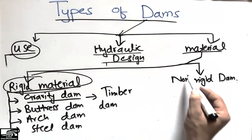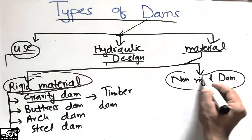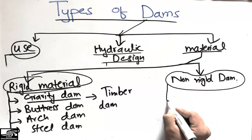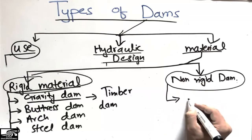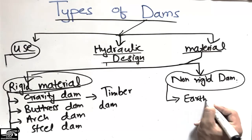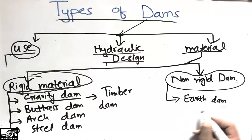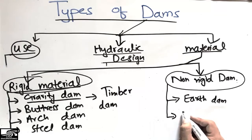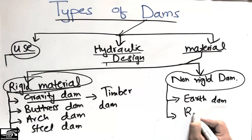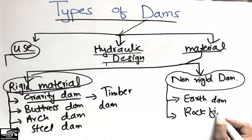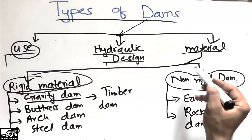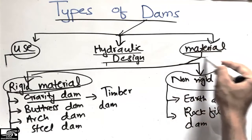There are also materials which are non-rigid, making non-rigid dams. Under this classification there are two types: the earth dam and the rock-fill dam. These were the further classifications of the material types of dam.